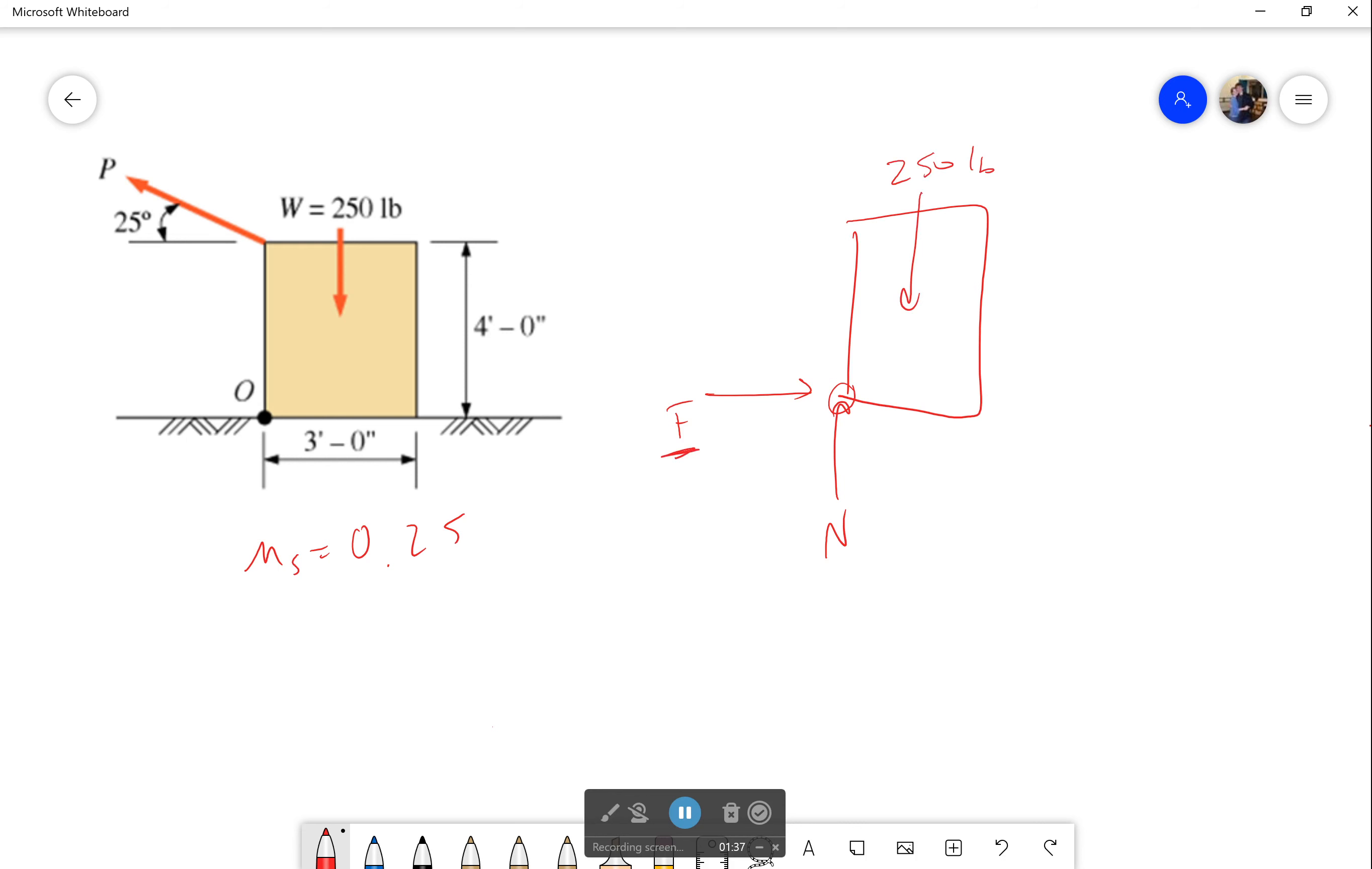If we have our weight pressing down that's 250 pounds and we have that force P right here which is at an angle of 25 degrees. So with that we can actually solve for what we want because we only care about the load P. We don't care about the frictional force or the normal force for this problem. Only the load P.